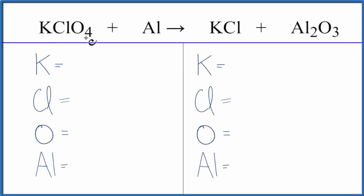To balance the equation, KClO4 plus Al, let's add the atoms up on each side of the equation. We have one potassium, one chlorine, four oxygens, and one aluminum atom.